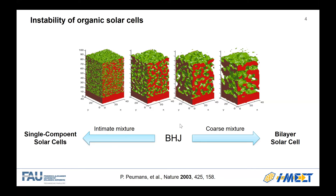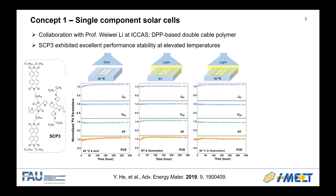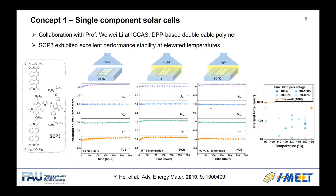One concept involves single-component solar cells, where we link the organic donor and acceptors together. In collaboration with Professor Wei Wei Li, we analyzed the stability of a double-cable polymer called SCP-3, which has a polymer donor part, a side chain, and an acceptor part (PDI), with donor and acceptors linked via an alkyl chain — so no deleterious phase segregation. We found that even at high temperature, under illumination, or both conditions, the devices are very stable. Even increasing the temperature over 160 degrees, we didn't observe any degradation.